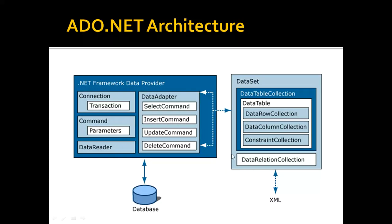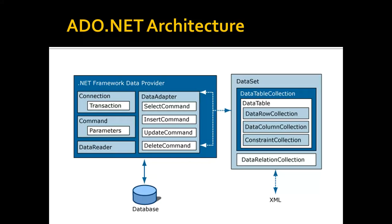The object-oriented framework means it must have some objects and a set of classes. Here we have a specific set of classes: Connection, Command, DataReader, and DataAdapter. These are all a specific set of classes which we work with through the data provider.